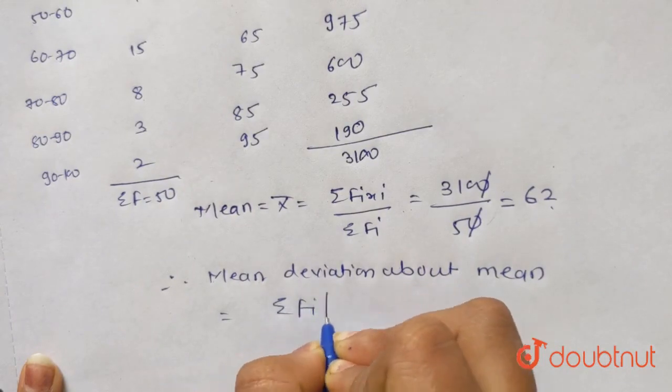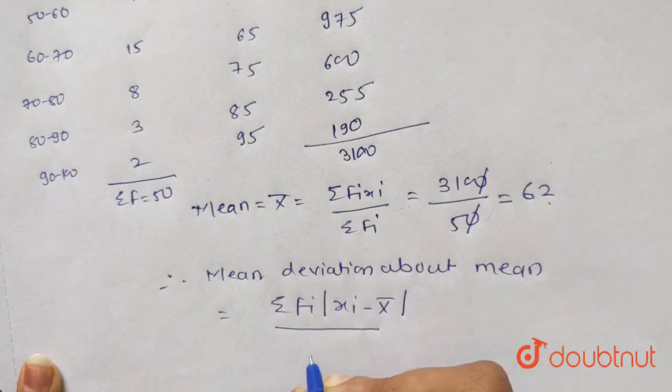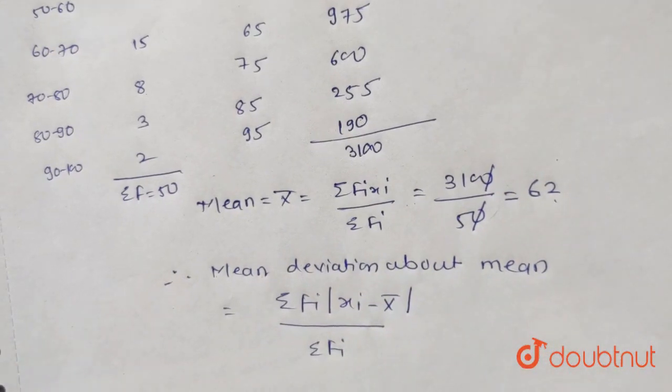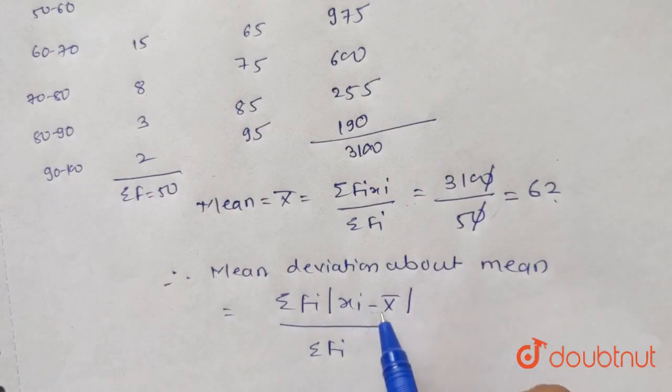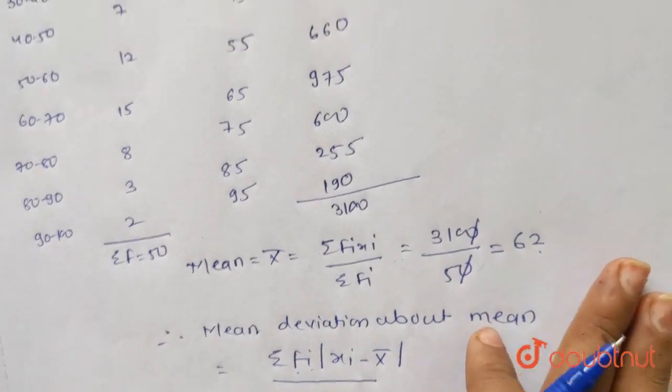Mean deviation is sum of FI into mod of XI minus x bar divided by sum of FI. So we make a fifth column which represents mod of XI minus x bar and sixth column FI into mod of XI minus x bar.